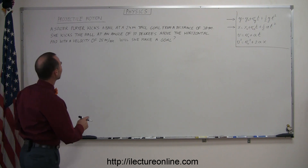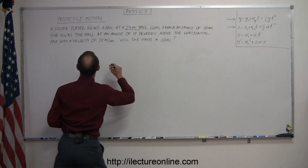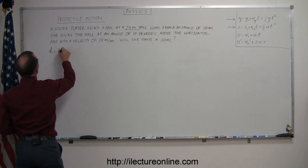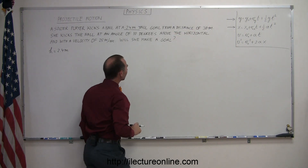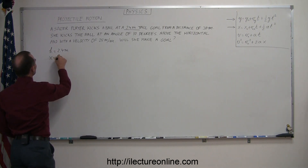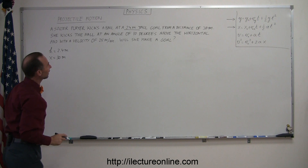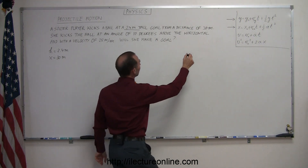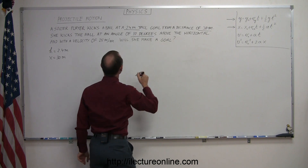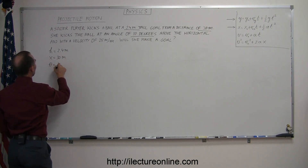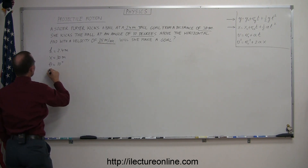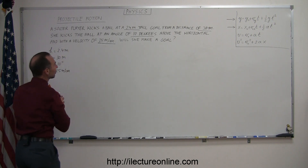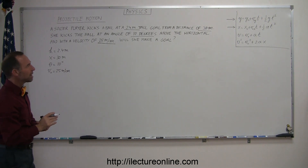Let's write down what's given. First of all, they tell us that the goal is 2.4 meters tall, so the height of the goal is equal to 2.4 meters. The distance from where she kicks the ball to the goal is 30 meters, so x equals 30 meters. The angle is 10 degrees, and finally the initial velocity, v initial, equals 25 meters per second. The question is: will she make a goal?